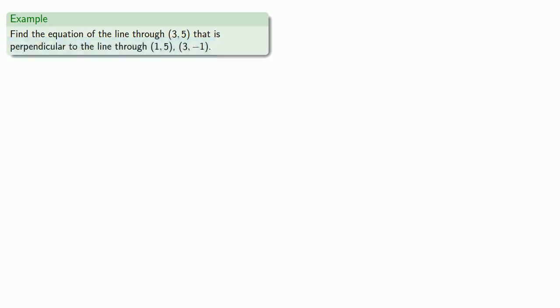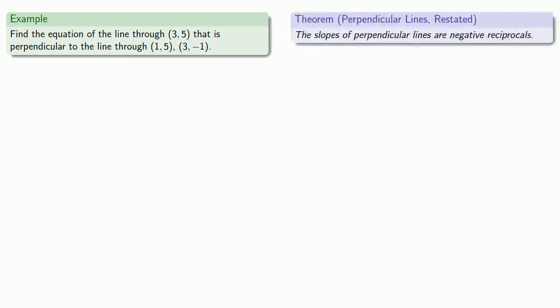So let's bring up what we know about the slopes of perpendicular lines. And that means we should find the slope of the line through the points (1, 5) and (3, -1). So we'll calculate that.